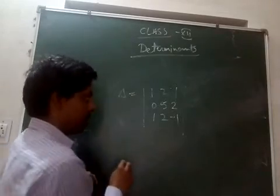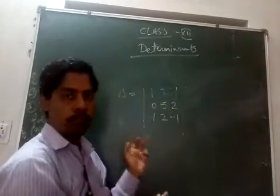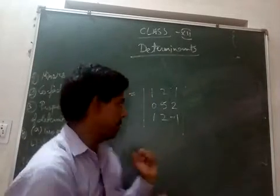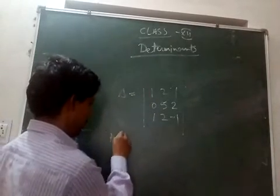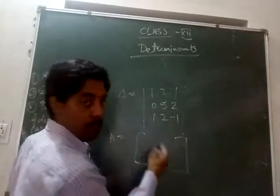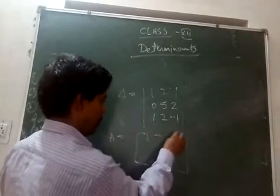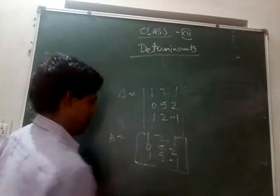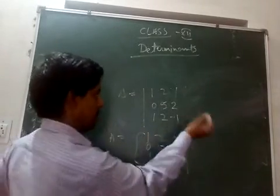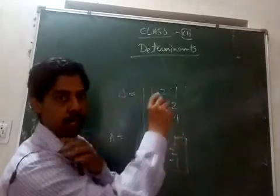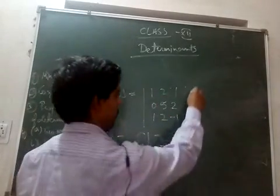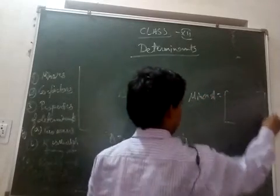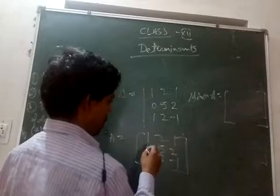Now we need to find the determinant. One way is to expand along any row — normally students expand along the first row. I will tell you: suppose I make a matrix out of it. This is a determinant; I make a matrix 1 2 1 / 0 5 2 / 1 2 -1. From this matrix we will construct two more matrices — one is minor A and another is cofactor A.